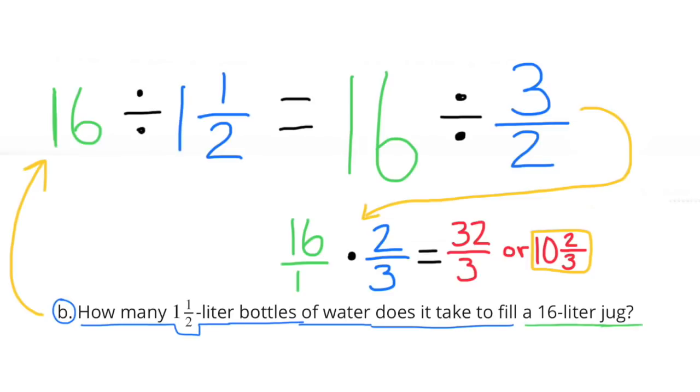Part B: How many one-and-a-half liter bottles of water does it take to fill a 16-liter jug? 16 divided by one-and-a-half equals 16 divided by three-halves, which is the same as 16 over one times the reciprocal of three-halves, which is two-thirds. So 16 over one times two-thirds equals 32-thirds or ten-and-two-thirds. It would take ten-and-two-thirds one-and-a-half liter bottles to fill a 16-liter jug.